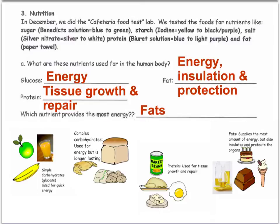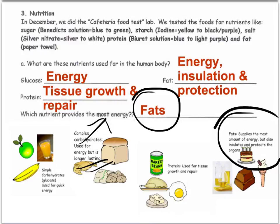Protein is for tissue growth and repair. Fat is for energy, insulation, and protection. Which nutrient provides the most energy? The answer is fats. Carbohydrates are longer lasting, but fats supply the most amount of energy because of the bonds between the fats — they store the most amount of energy. They may not be longer lasting than carbohydrates, but they provide the highest amount.